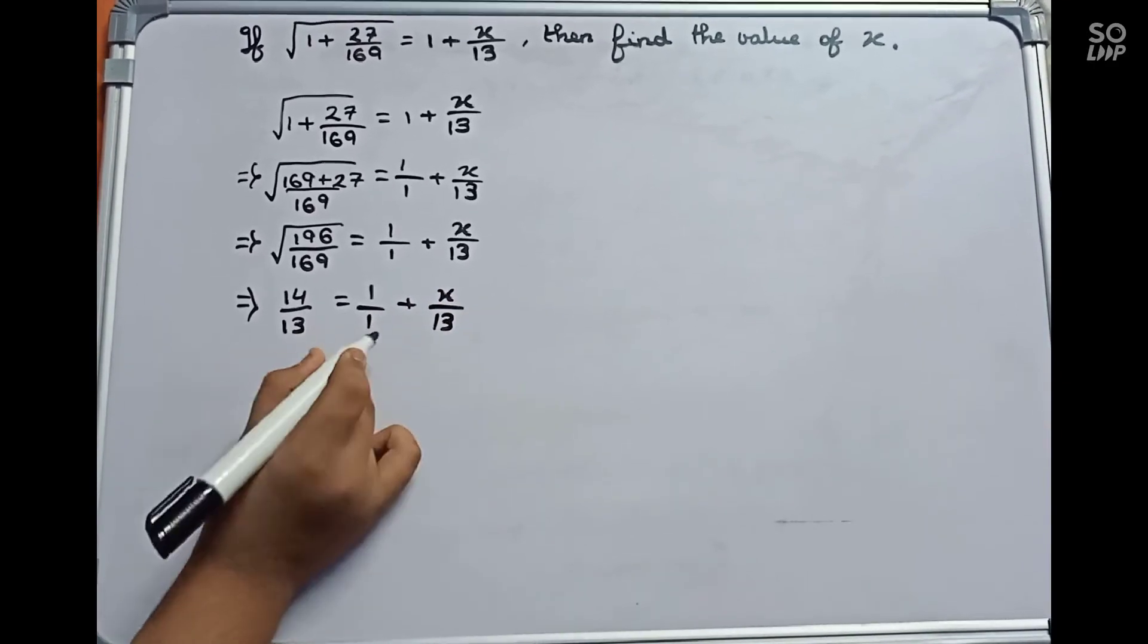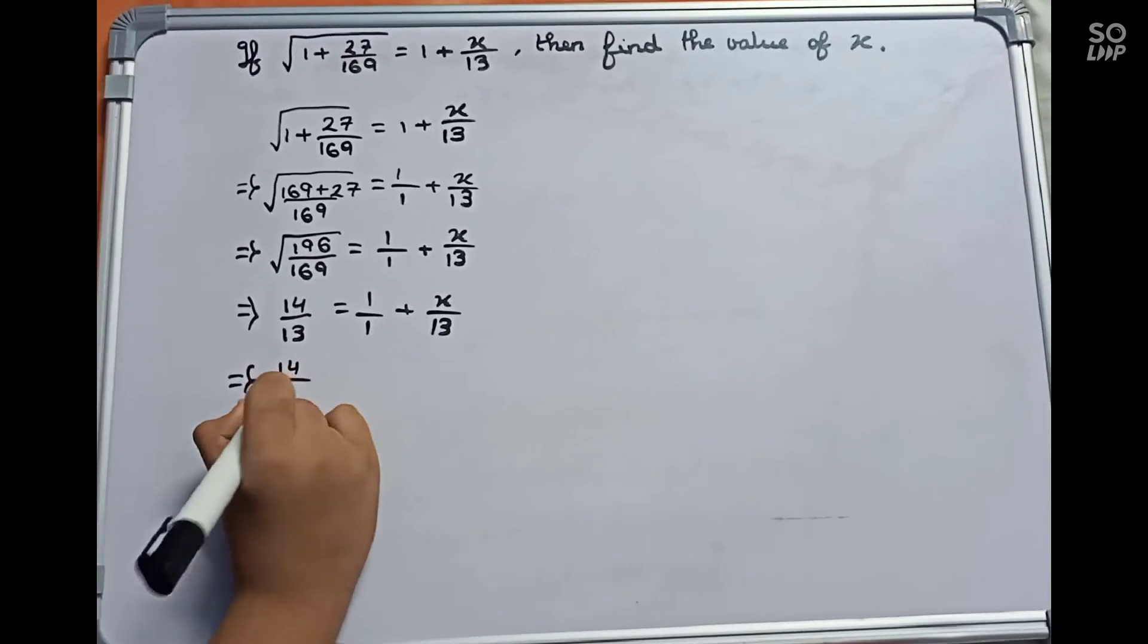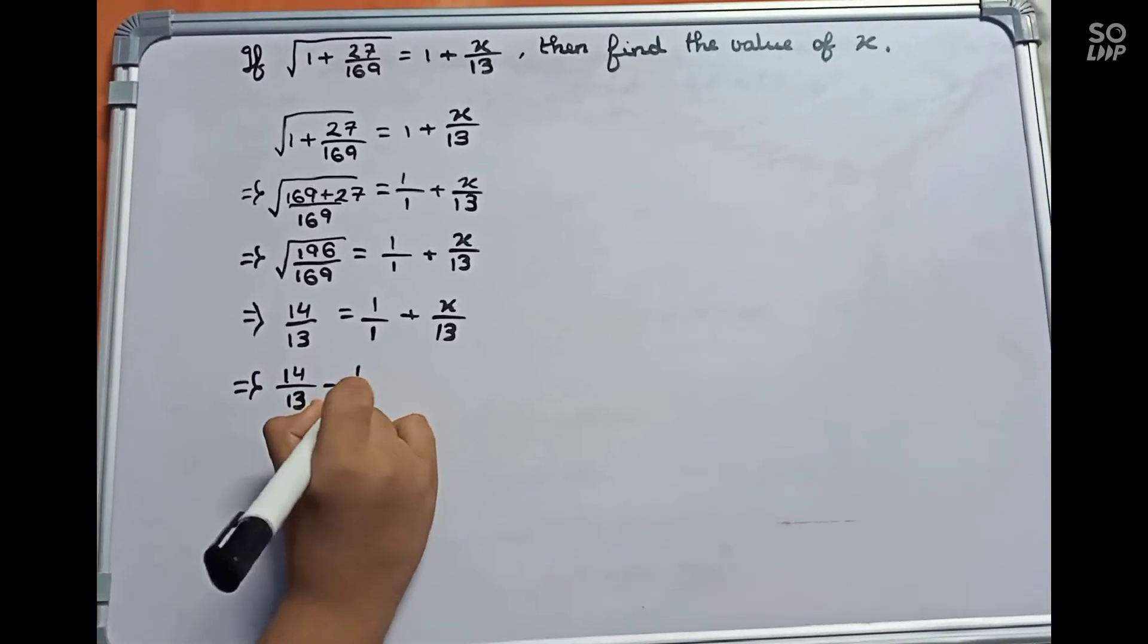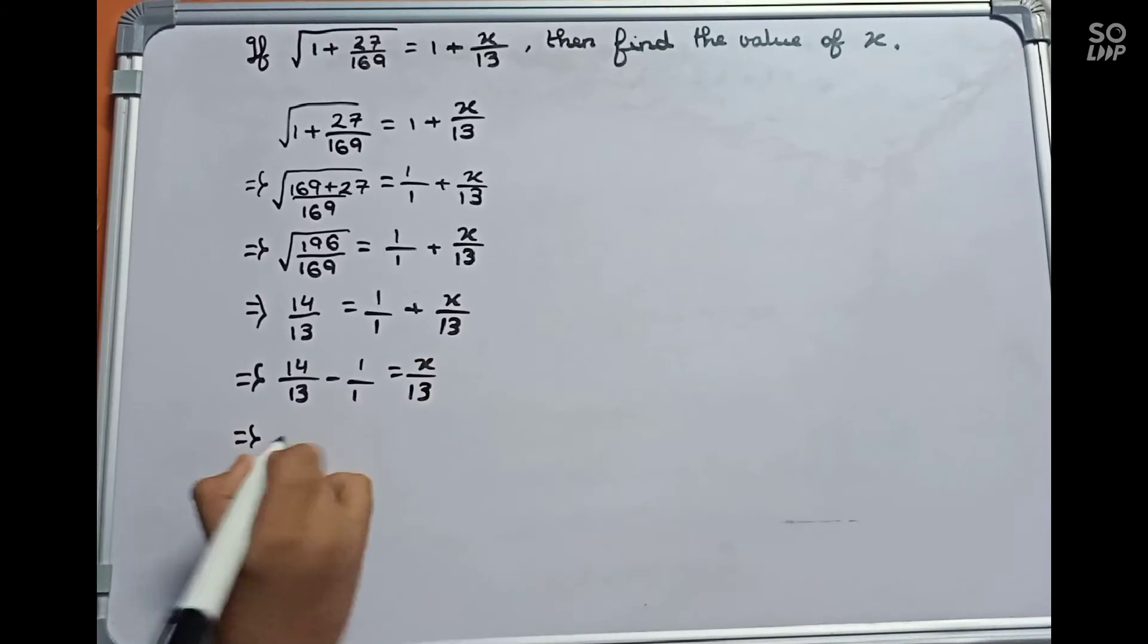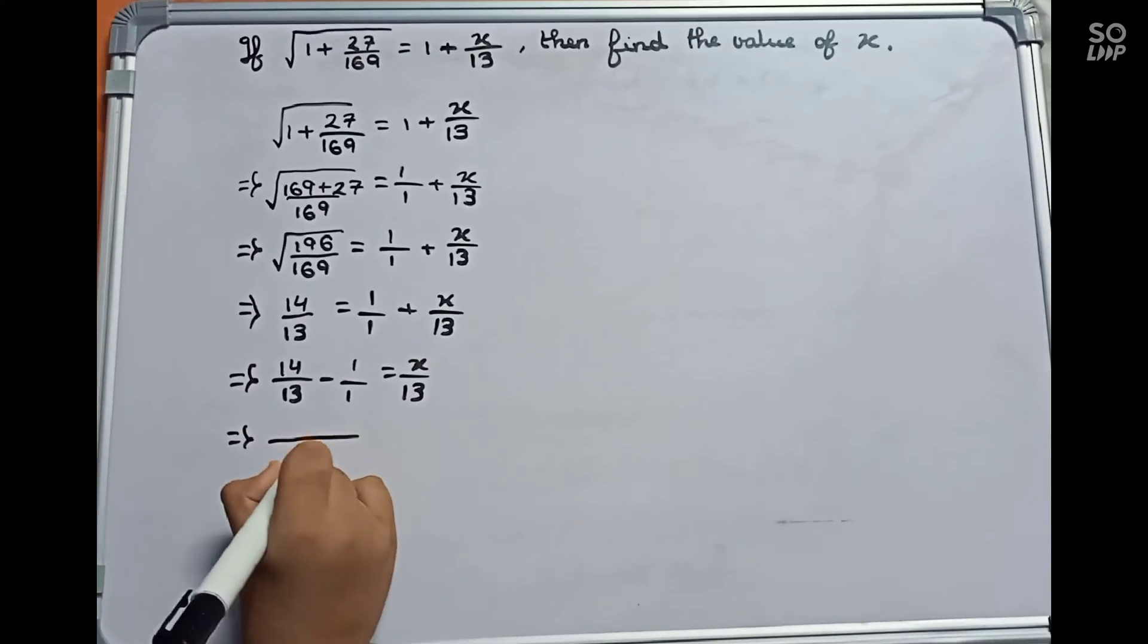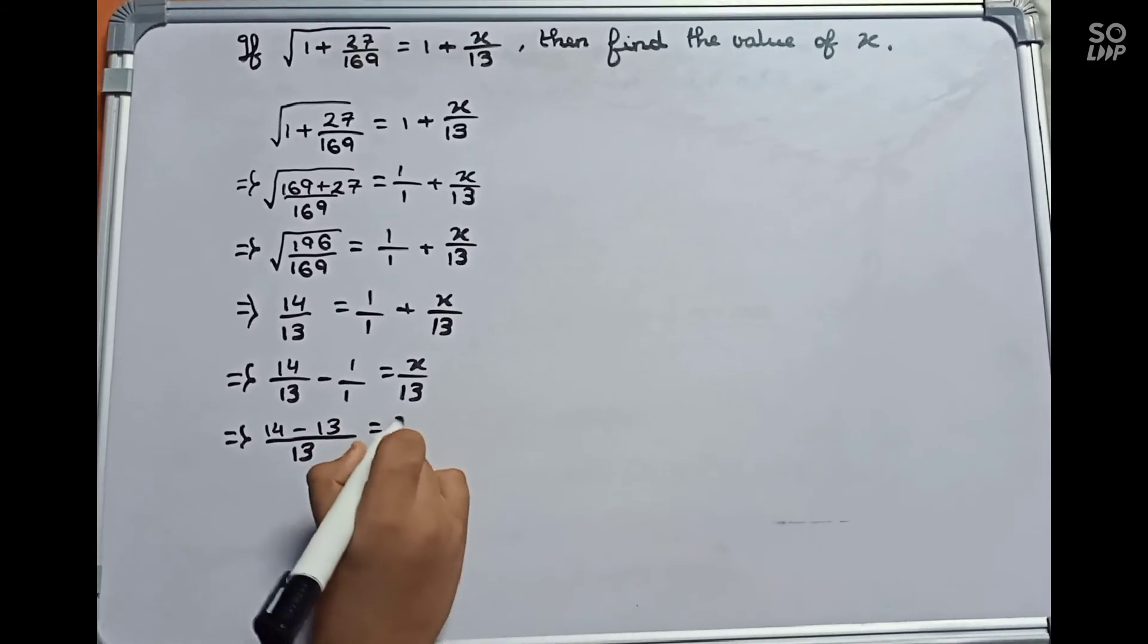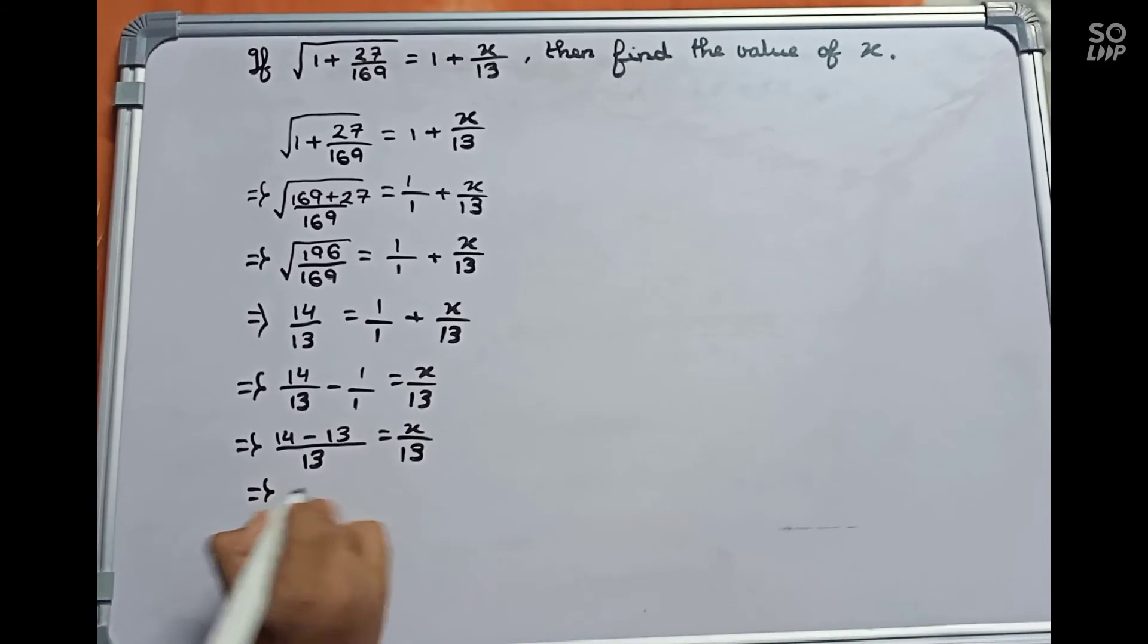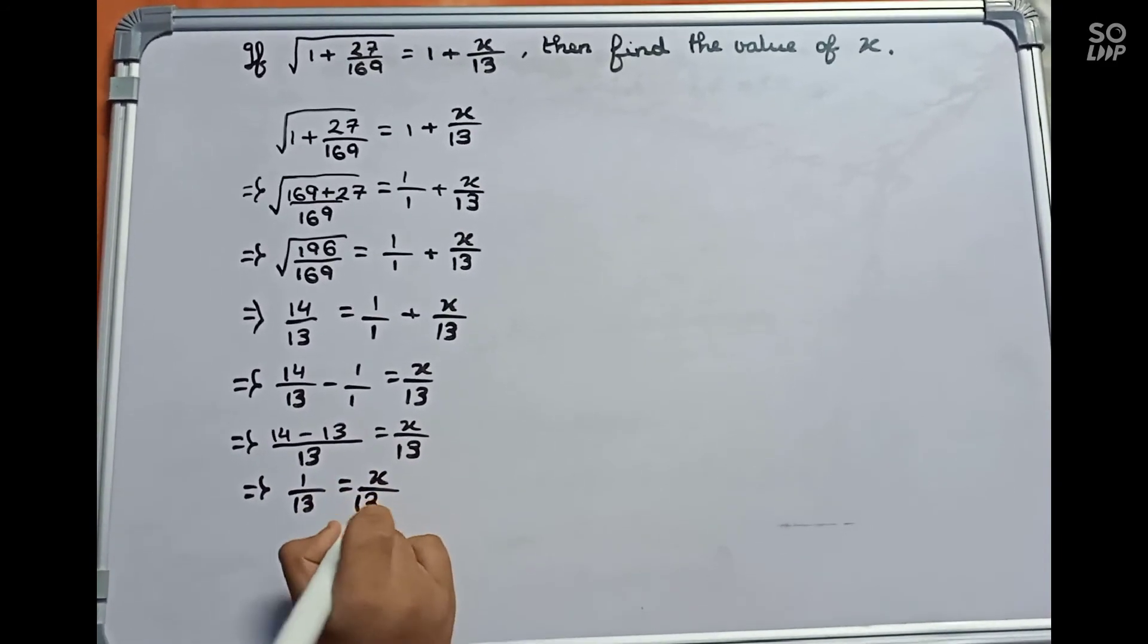Now I will take one to this side, so the one sign will become minus. 14 by 13 minus 1 equals to x by 13. So it becomes 1 by 13 equals to x by 13.